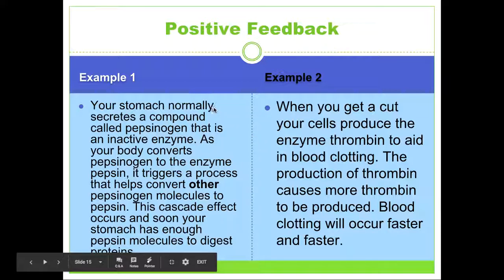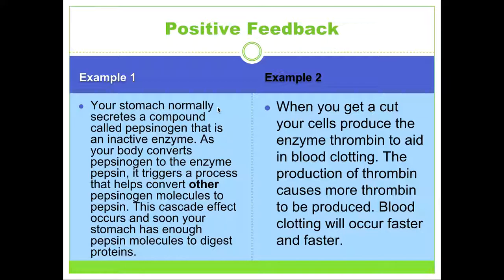Example one: your stomach normally secretes a compound called pepsinogen, which is an inactive enzyme. As your body converts pepsinogen to the active enzyme pepsin, it triggers a process that helps convert other pepsinogen molecules to pepsin. This cascade effect occurs, and soon your stomach has enough pepsin molecules to digest proteins. Once one pepsinogen molecule is converted, it's like a waterfall effect — one more, and then more and more — until all the proteins in your stomach are digested.